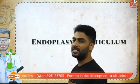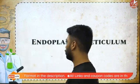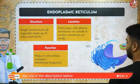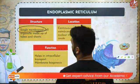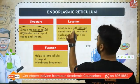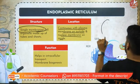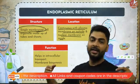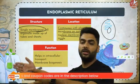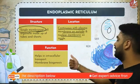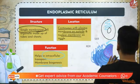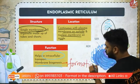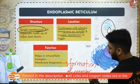We begin with endoplasmic reticulum, also called ER. It is a single-membrane cell organelle, continuous with the plasma membrane on the outside and the nuclear membrane on the inside. So basically it is a pathway from the nucleus to the cell membrane. It helps in intracellular transport and membrane biogenesis.